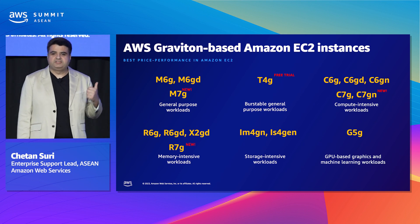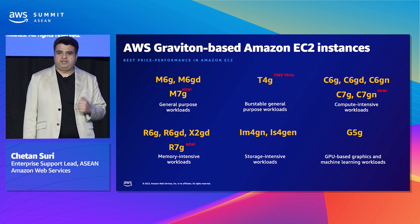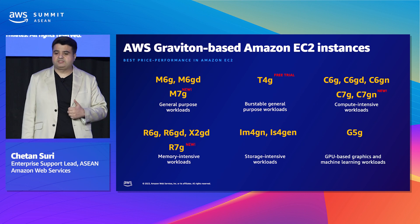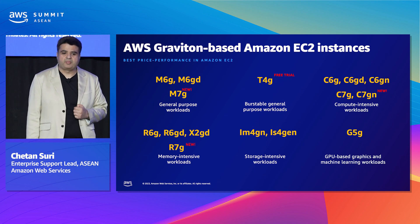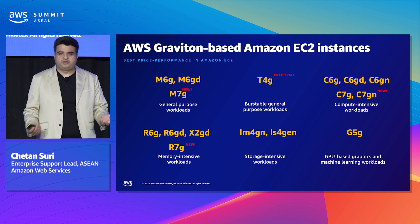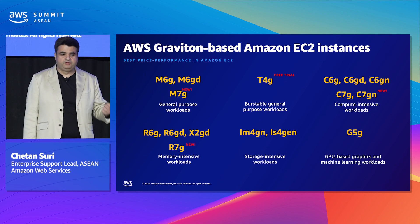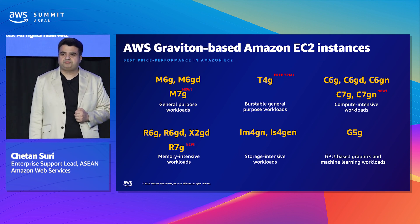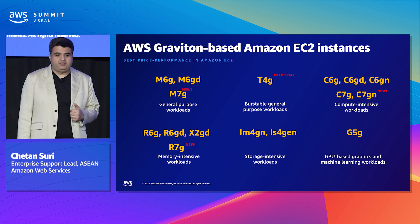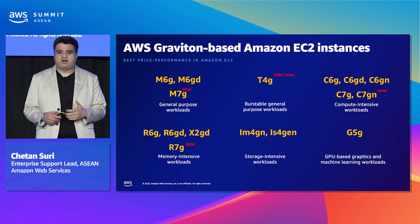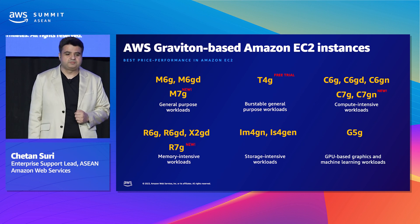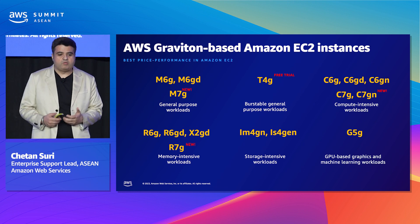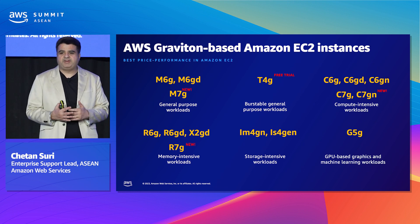These are some of the instance types Graviton supports. The Graviton 2 family includes M6G, C6G, and R6G, and the Graviton 3 family includes M7G, C7G, and R7G. For general-purpose workloads, use T4G instances. For cost-effective high performance at a low price, use the C family. For memory-optimized use cases, use R family instances. With G5G, it's the first time ARM-based instances can provide deep learning acceleration on AWS cloud. The overall goal with Graviton is to push the price performance envelope for a wide variety of application workloads.